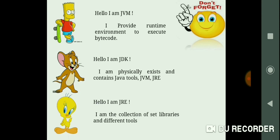Don't forget this. The first one says, hello, I am JVM. I provide runtime environment to execute the bytecode. Second one says, hello, I am JDK. I am physically existing and contain Java tools, JVM and JRE. And the last one says, hello, I am JRE. I am a collection of set of libraries and different tools.